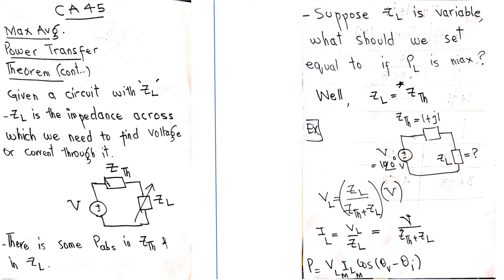Welcome to the 45th lecture of circuit analysis. Today we will continue studying the maximum average power transfer theorem. We started studying this theorem in our last lecture, and there are queries from some students regarding its understanding. Given a circuit with a load impedance ZL, here is an example circuit with a combination of impedances — the Thevenin equivalent — an input source, and a variable ZL.